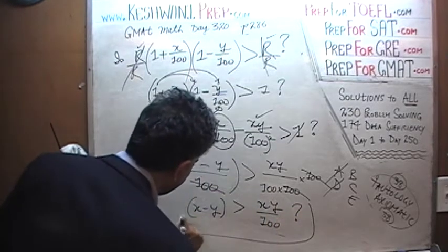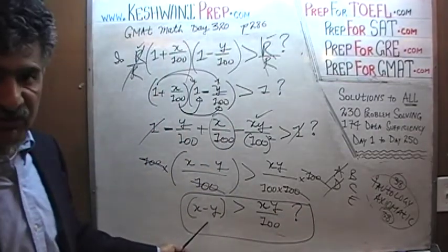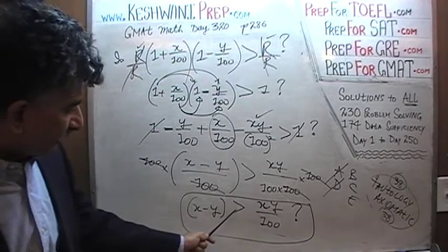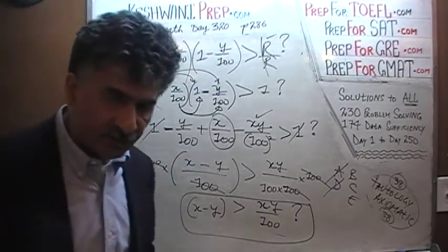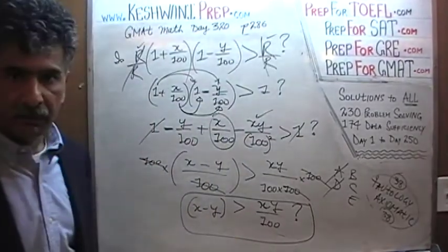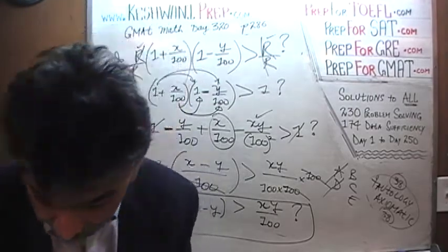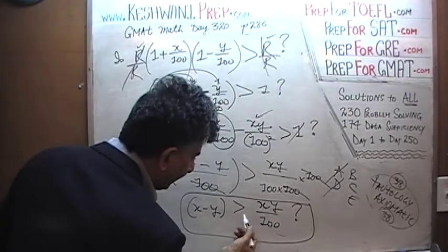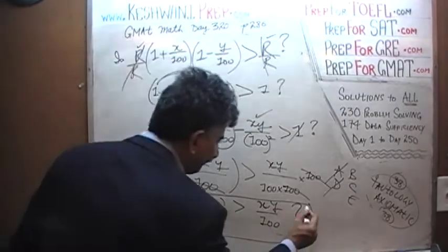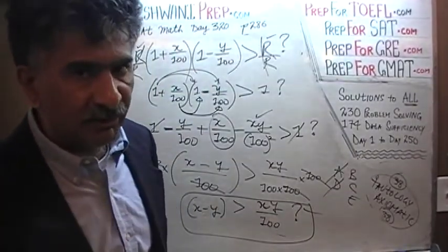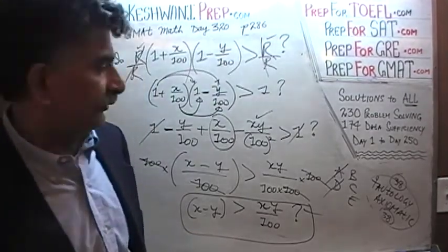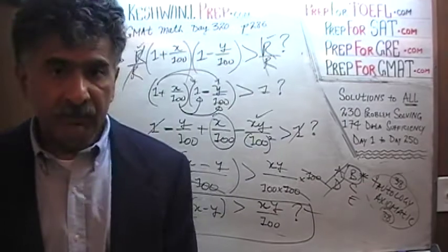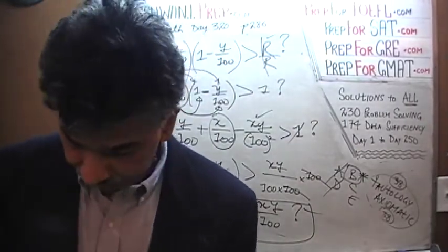If we can establish that X − Y > X·Y/100, then the answer to 'did the rent go up?' is yes. The second statement tells us exactly that: X·Y/100 < X − Y. The second statement does the job quite nicely — it tells us precisely what we needed to know. The second statement by itself is enough. But as I said from the very beginning, it wasn't meant for everybody.